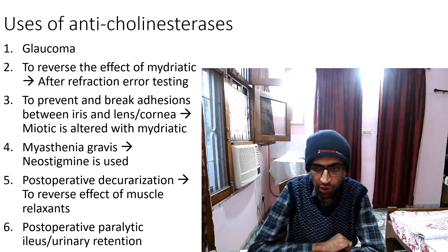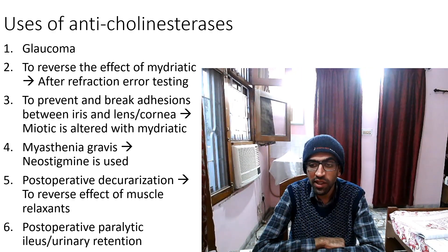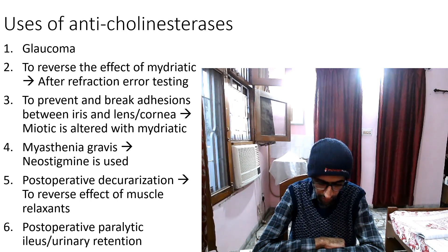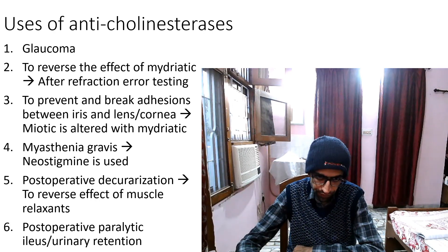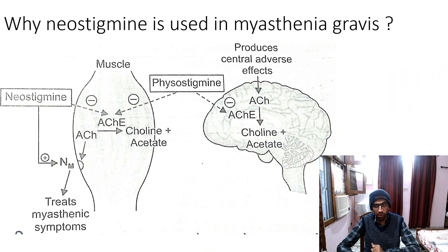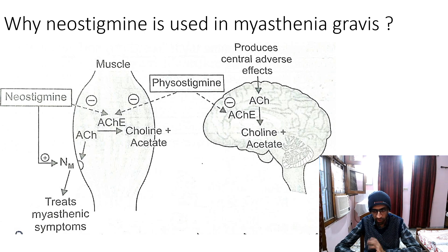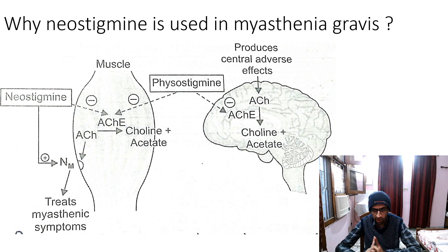Intramuscular neostigmine offers dramatic improvement in post-operative urinary retention. Neostigmine is used in myasthenia gravis because it does not penetrate the blood-brain barrier, avoiding CNS side effects. Additionally, it has a direct agonistic action on NM receptors at the neuromuscular junction.